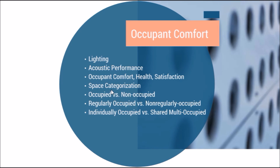With space categorization, we should know that not every space in a building is going to be lit or ventilated the same. We have occupied versus non-occupied spaces. Regularly occupied spaces are those occupied about an hour or more per day — even eight hours a month still counts. Non-regularly occupied spaces could be hallways or locker rooms. Individually occupied spaces are usually occupied by one person, such as a private office, a jail cell, or a hotel room. Shared multi-occupied spaces are inhabited by multiple people at a time, such as auditoriums, conference rooms, and hotel lobbies.